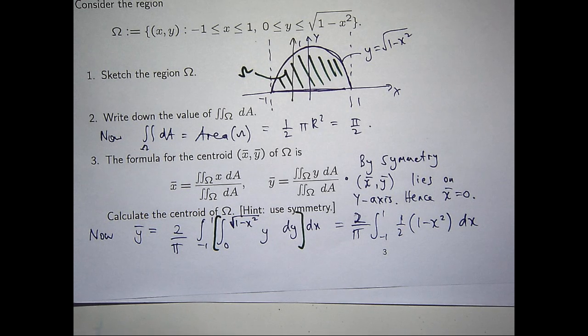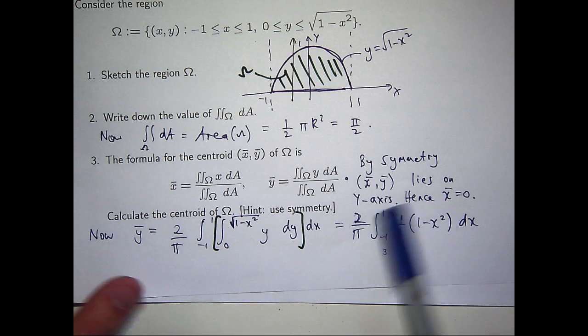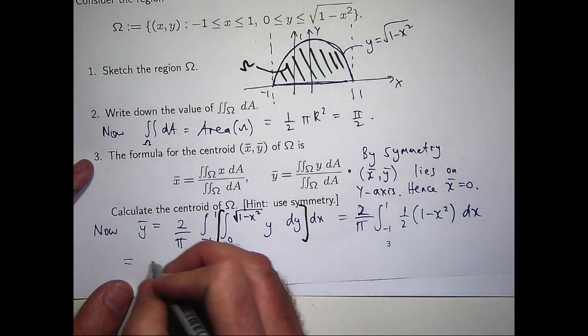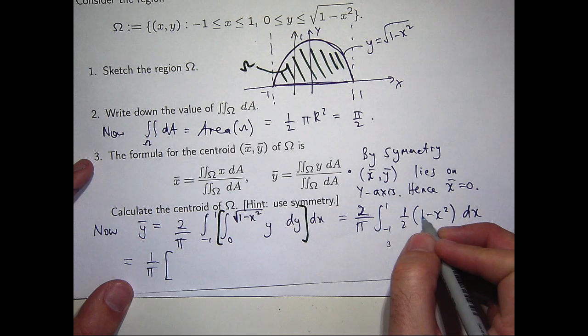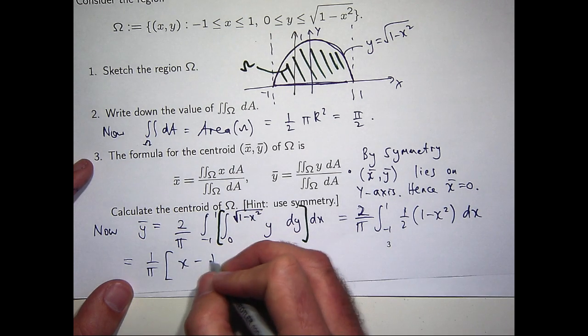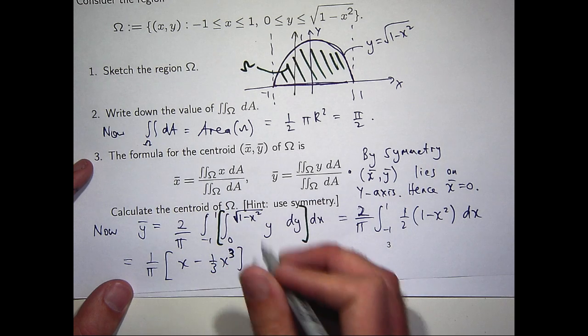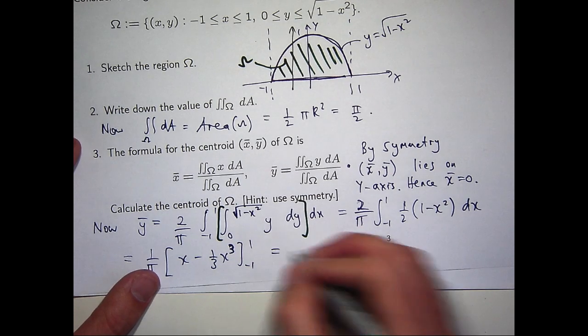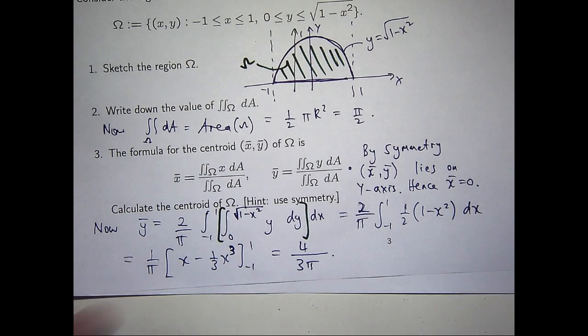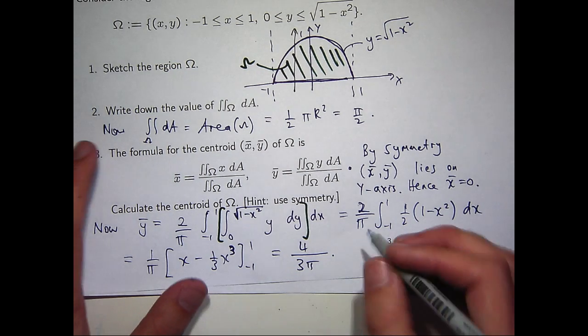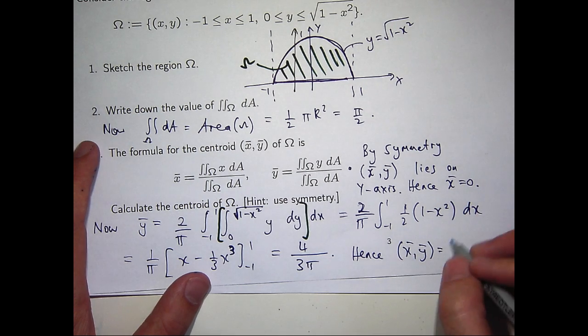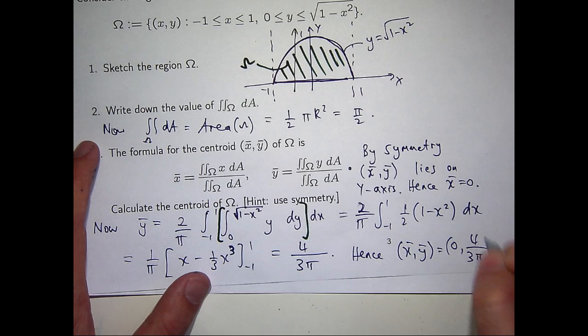So now, all I really need to do is do this final integration. You can see that the 2s are going to cancel off here. So if I integrate 1 with respect to x, I'll get x, I'll do the other part, it'll become this. So all I need to do now is sub in my values, and if I do that, I should get 4 on 3 pi. So what is the centroid? Well, it's just 0, 4 on 3 pi.